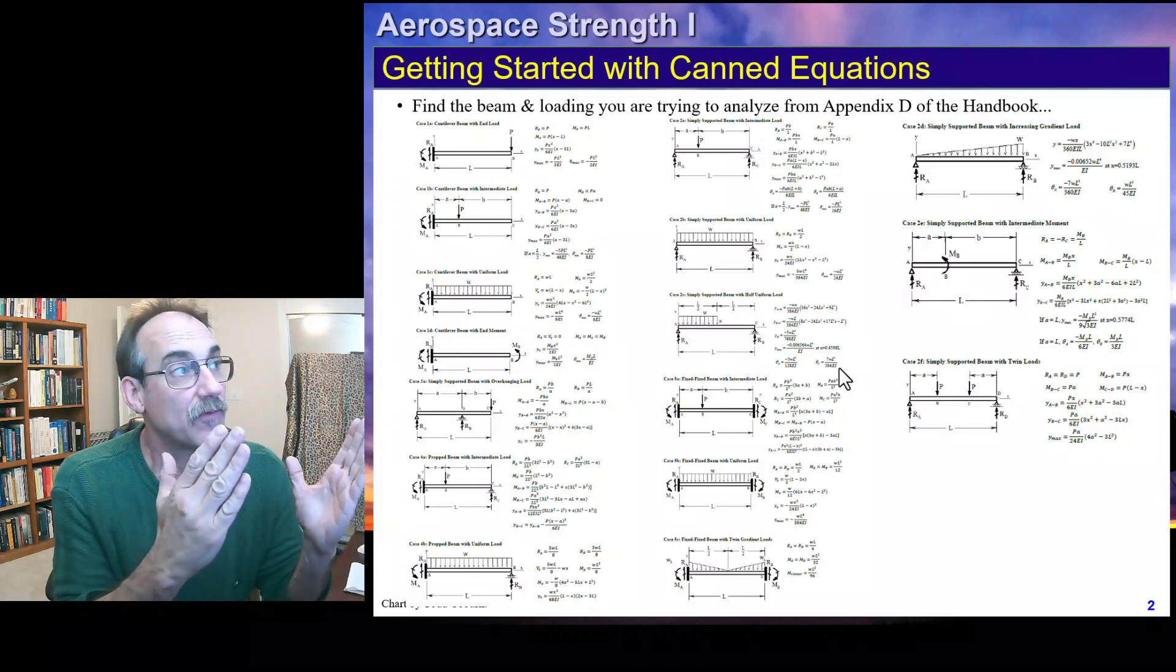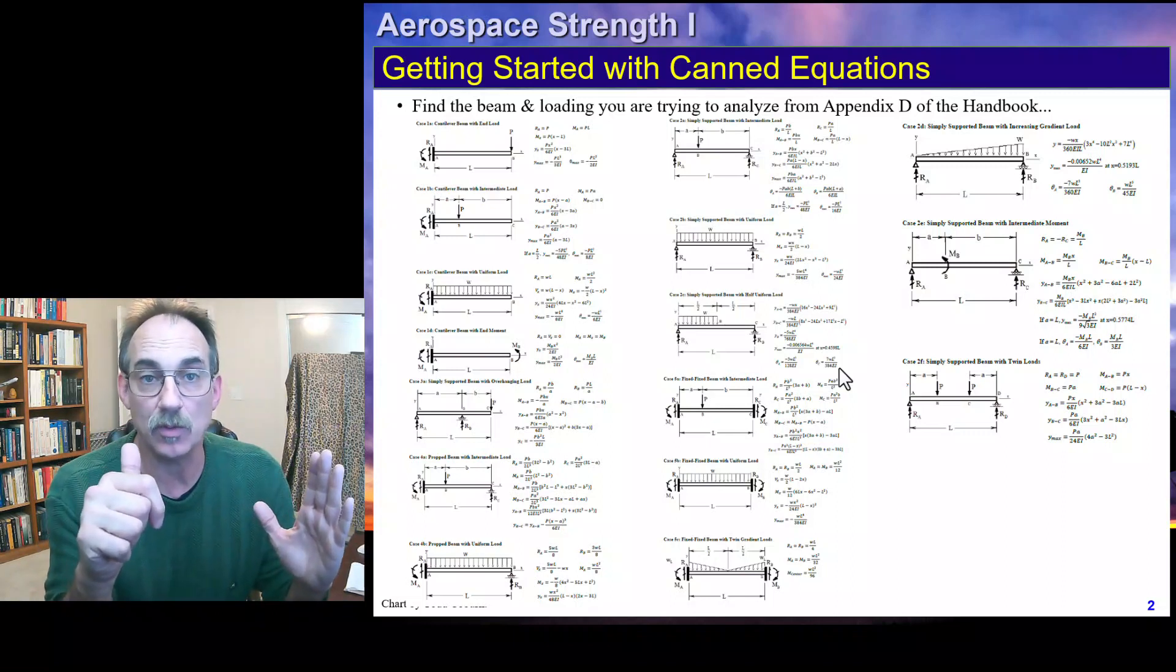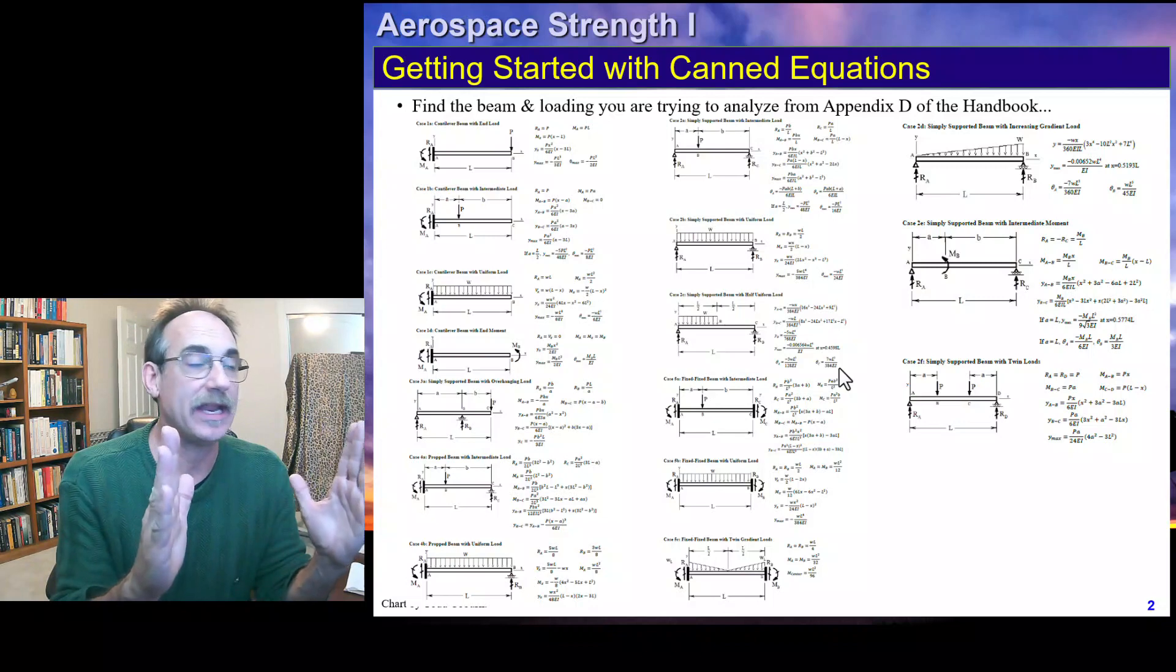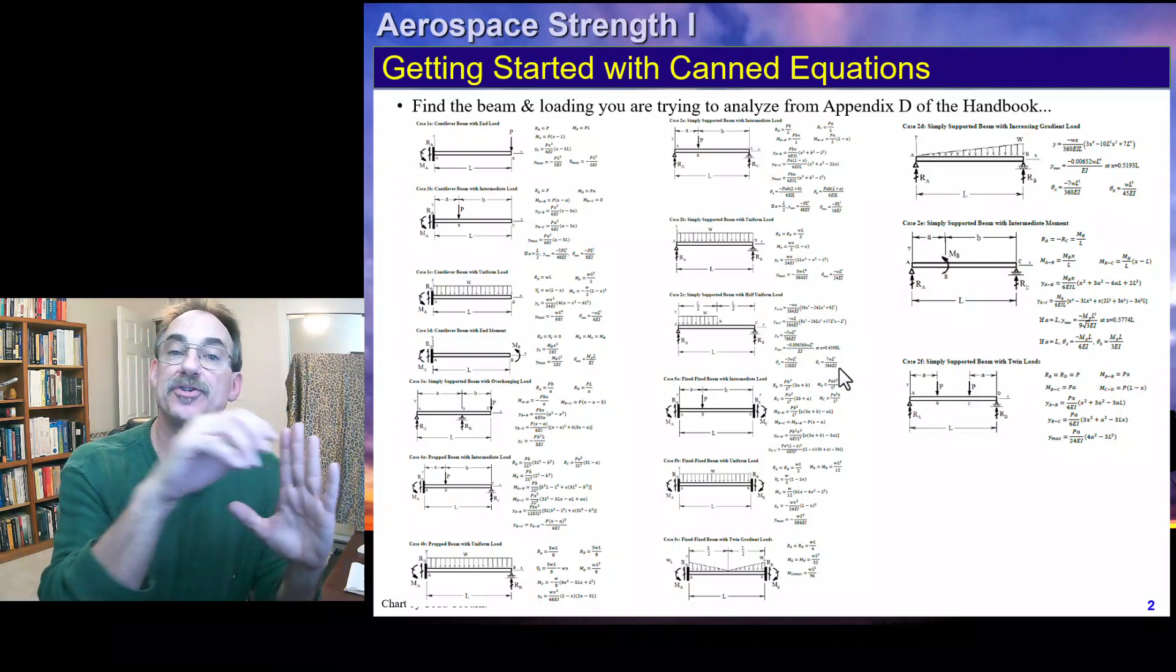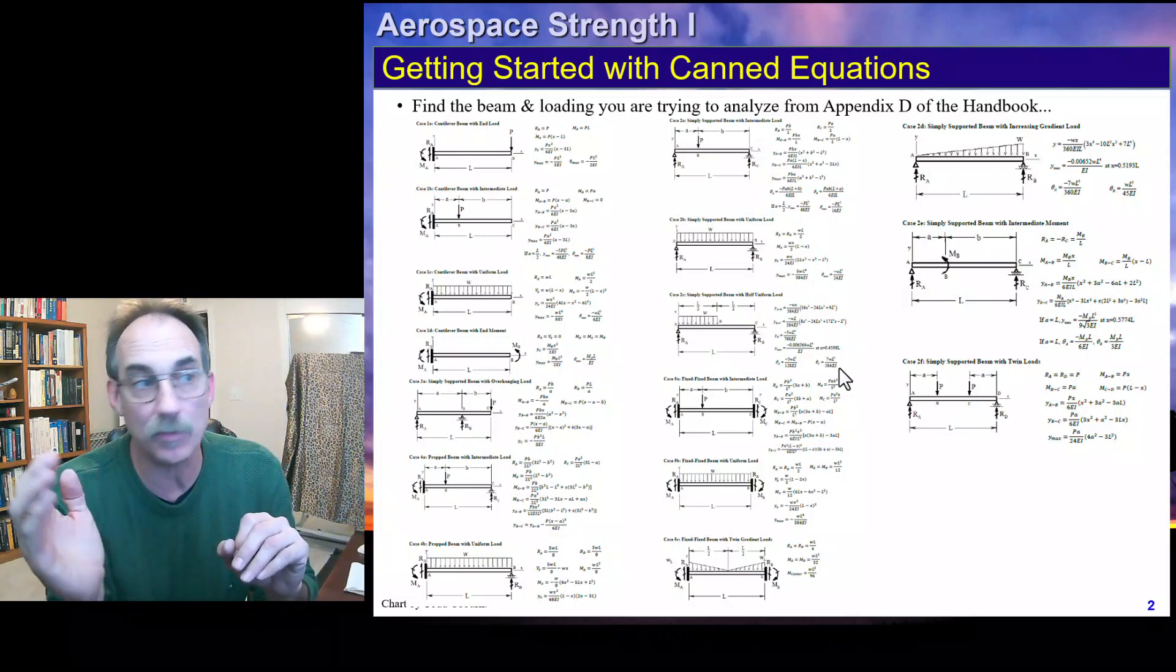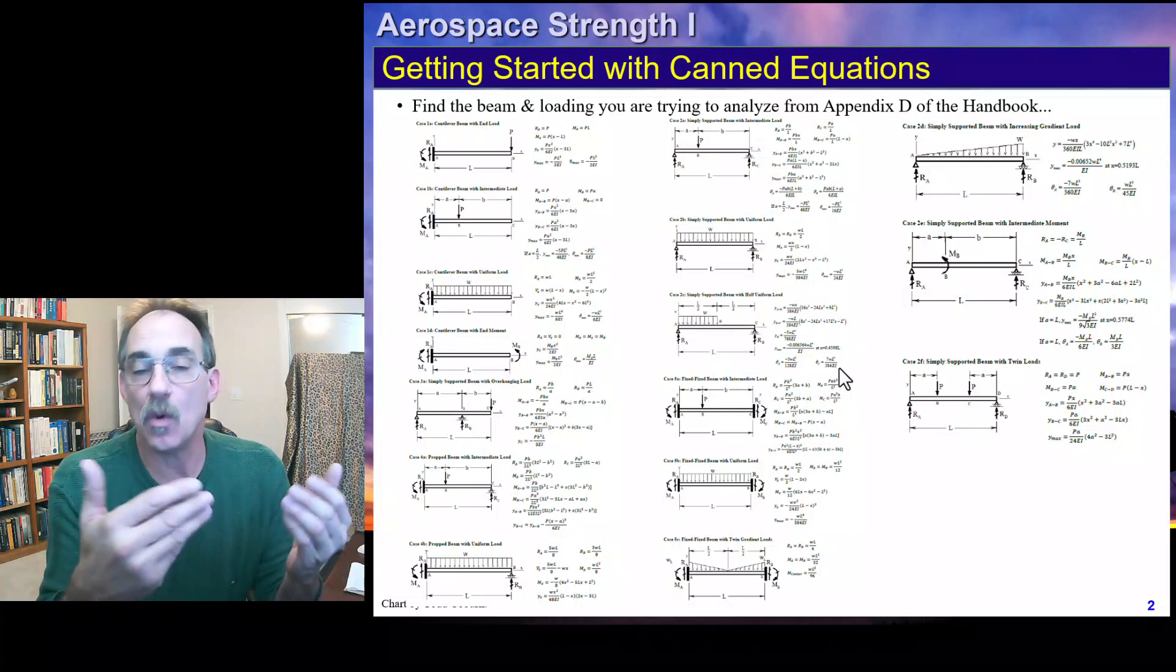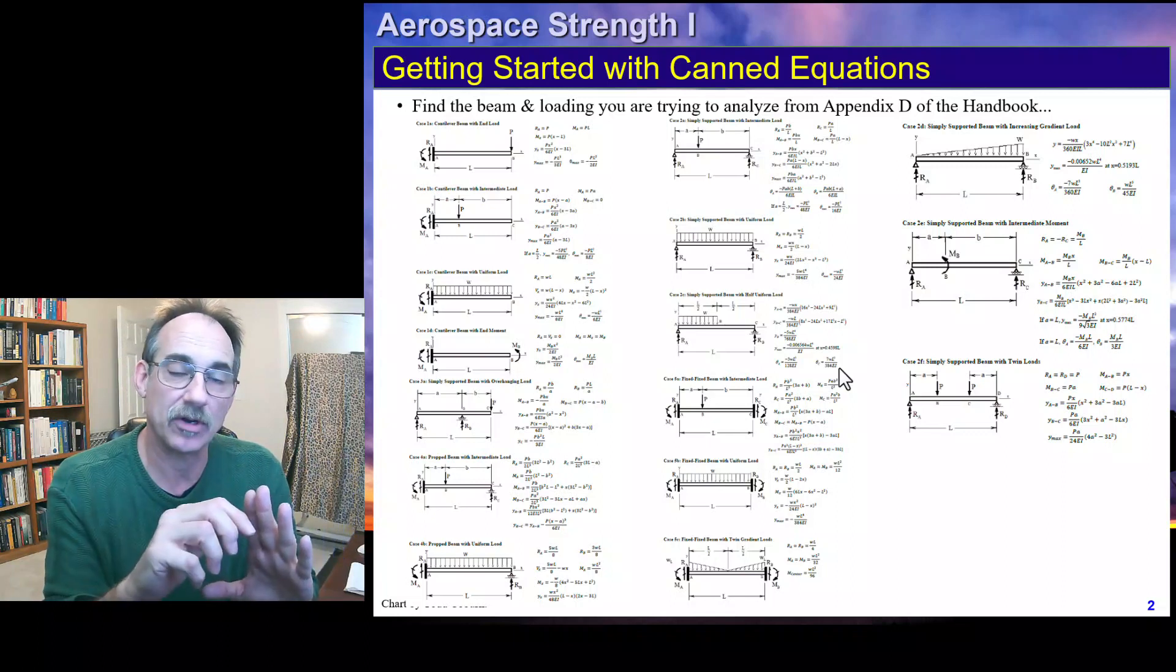Next, we're going to look at the external loading. If we find a cantilever beam that has a point external load, whether it's up or down, on the end of the beam, that would be our Case 1A. If we see the same beam, same constraints, but the force is located somewhere else, that's going to be Case 1B. If you have a distributed load, that's going to be Case 1C. If it's a moment, it's going to be 1D as long as the moment is on the end. If you have an overhanging beam with two simple supports, you've got Case 3A, and so on with various constraints.